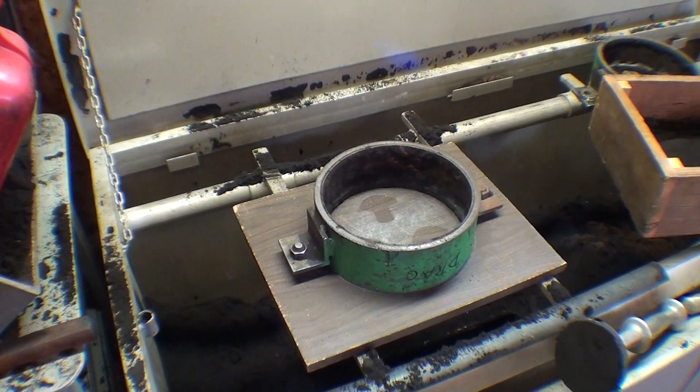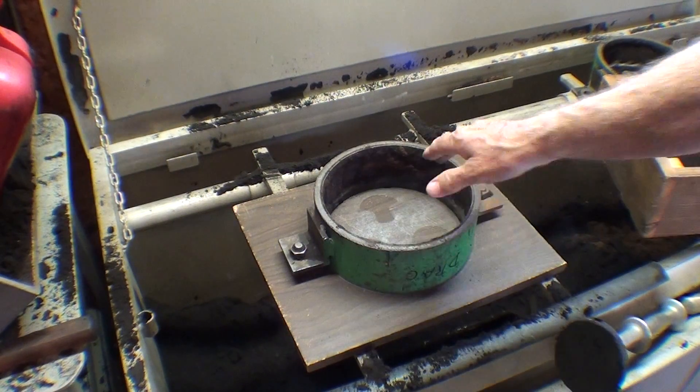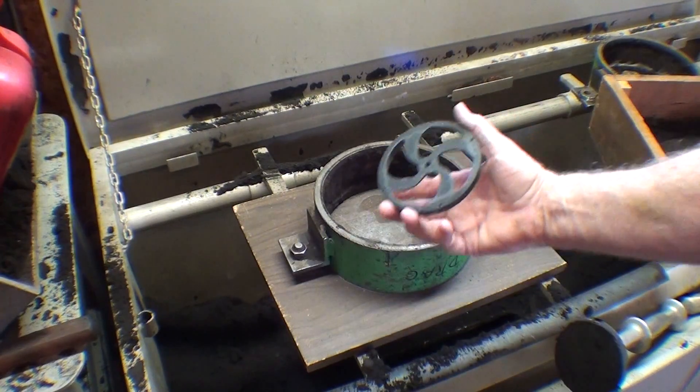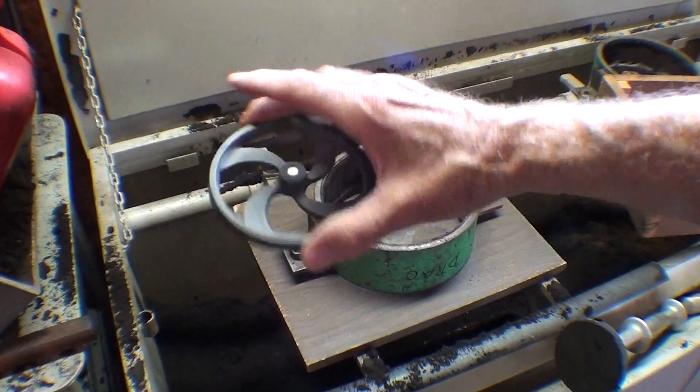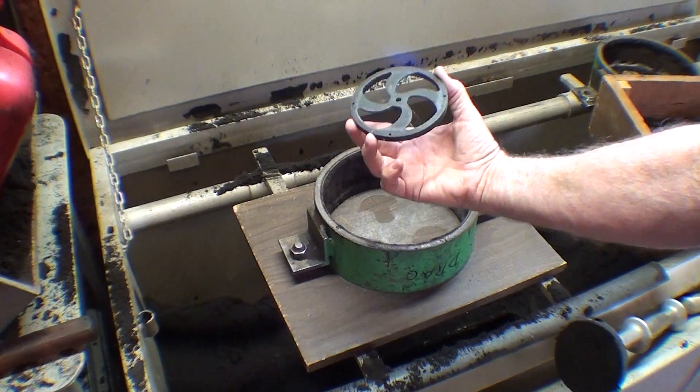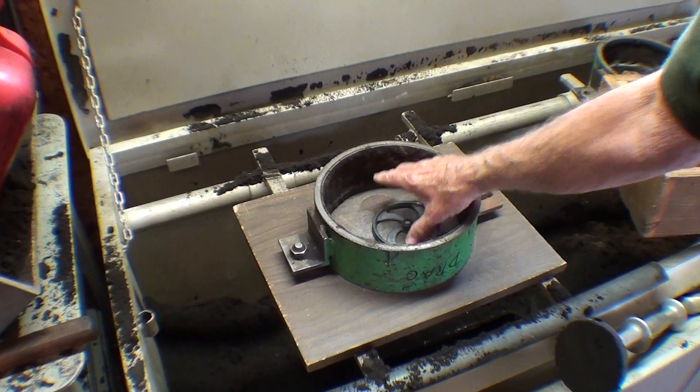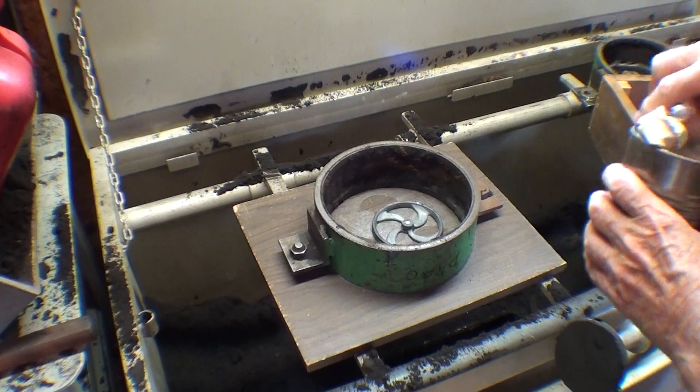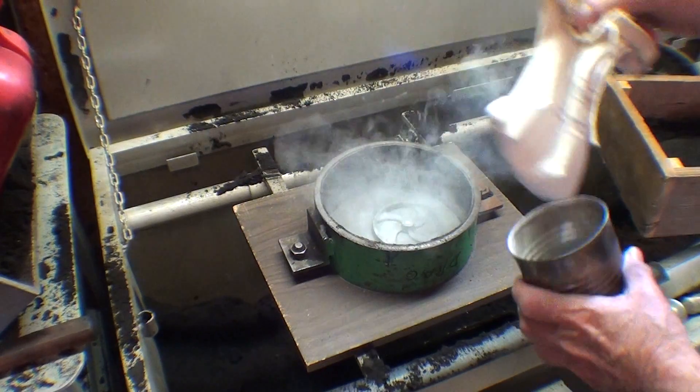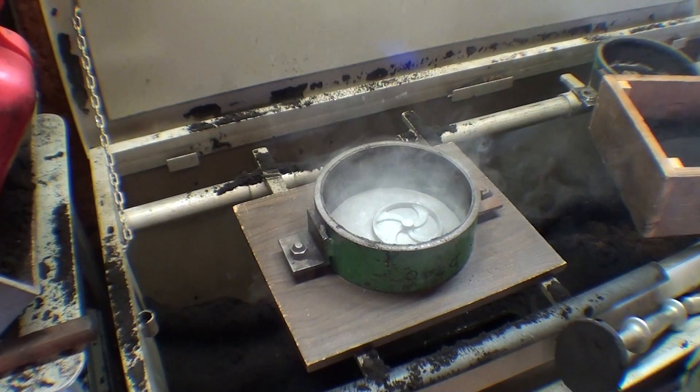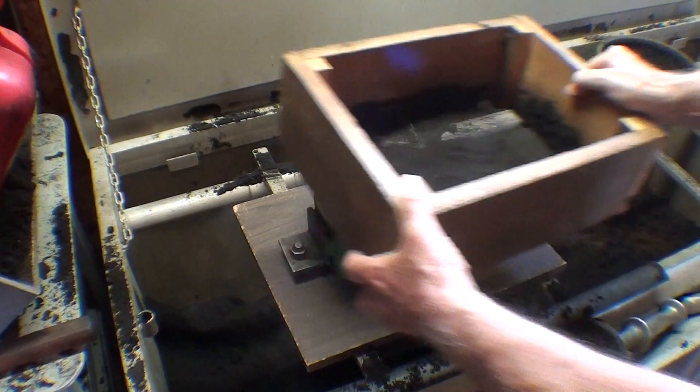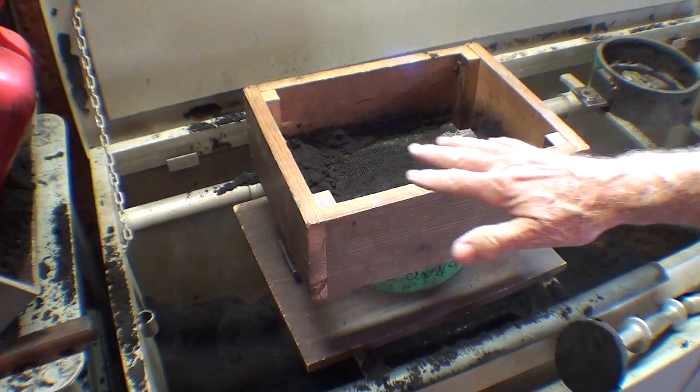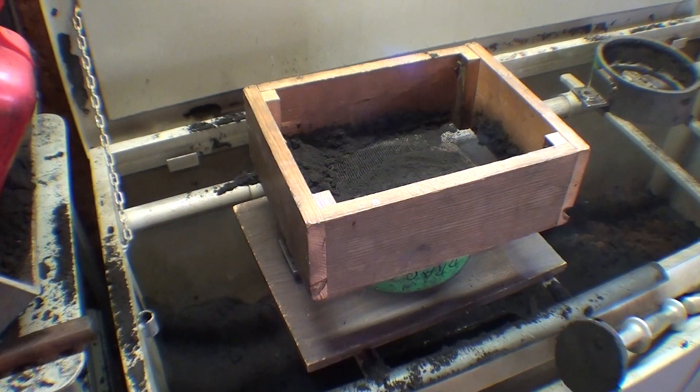This is the drag, which is the bottom half of the flask, and this is the half of the pattern without any pins on it, so it will set flat. I'm going to put a little parting sand on it, sift a little sand with the riddle, and then I'm going to go ahead and ram it up.